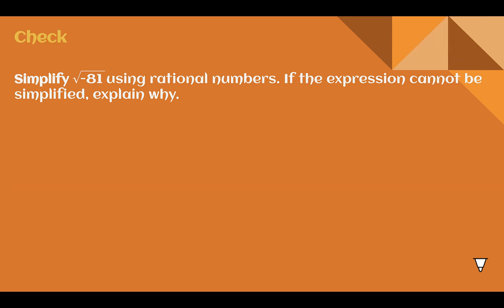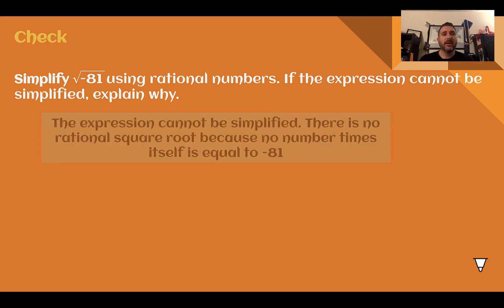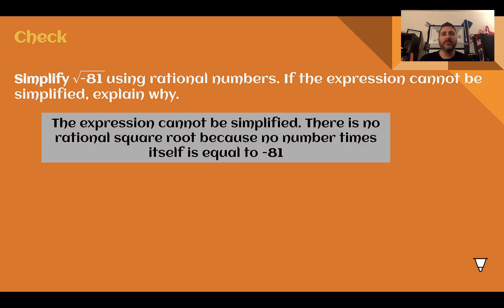Check your understanding: simplify the square root of negative 81 using rational numbers. If the expression cannot be simplified, explain why. Pause the video and complete this check. Just like the last example, it cannot be simplified. There are no numbers that multiplied by themselves give negative 81. We could do positive 9 and negative 9, but they're not the same number.